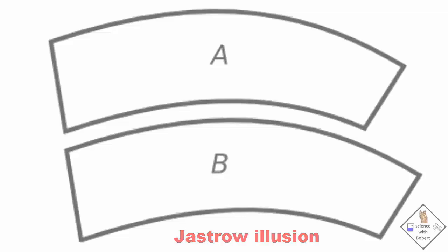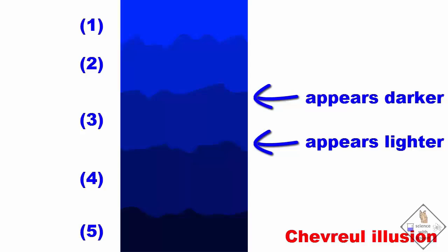This is a Chevreul illusion. There are only five colors in this image. However, our brain perceives the top of each gradient to be darker and the bottom lighter.